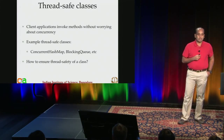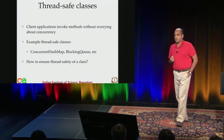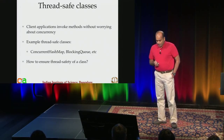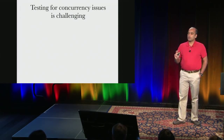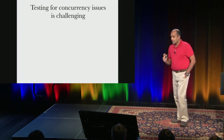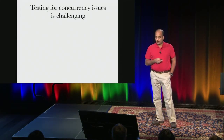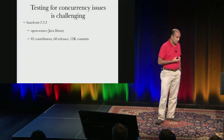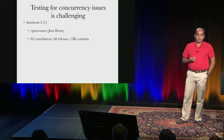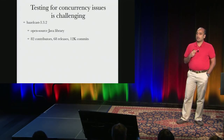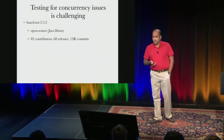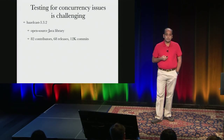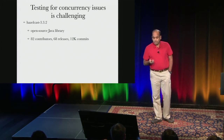But then somebody has to do the heavy lifting — how do you ensure thread-safety of a class? Testing for concurrency issues in general is challenging. I'll show you an example using a fairly popular codebase: Hazelcast, an open source Java library used in highly concurrent multithreaded contexts. It's an actively developed library with many commits and quite a few releases.